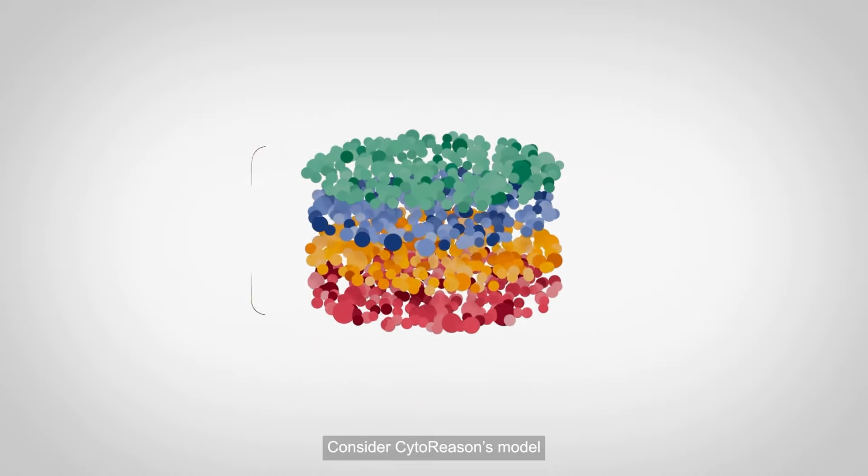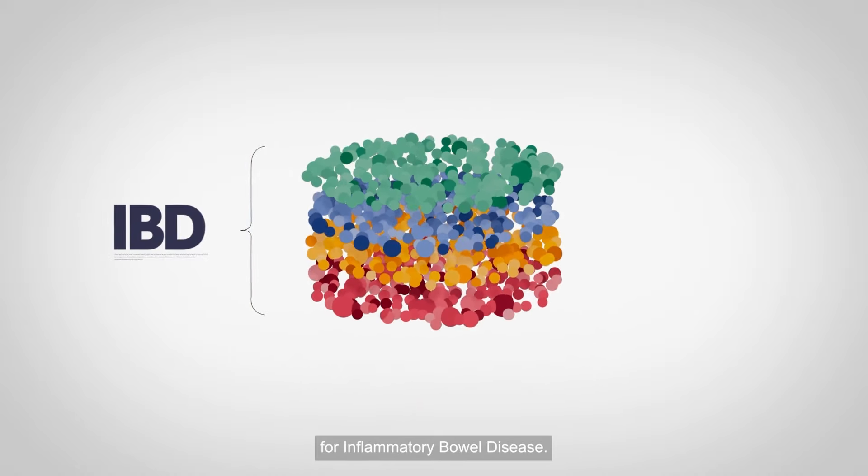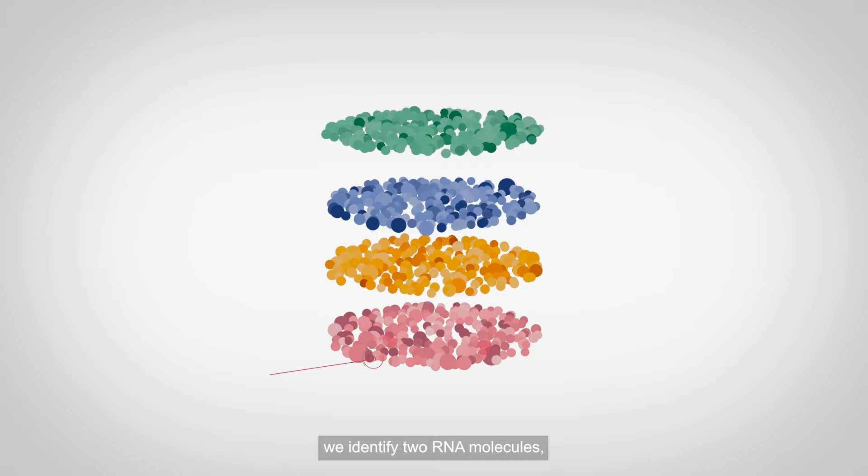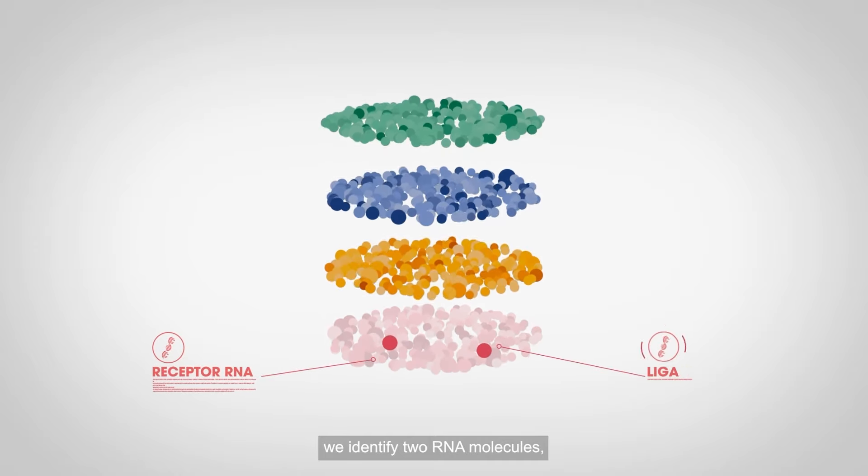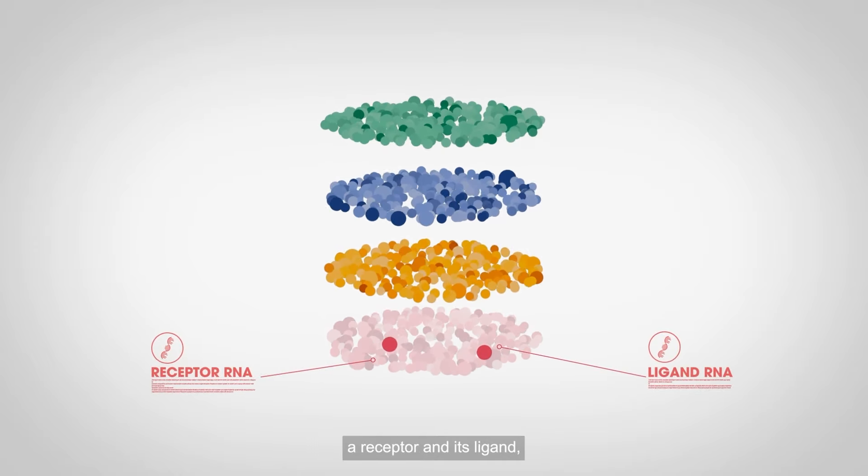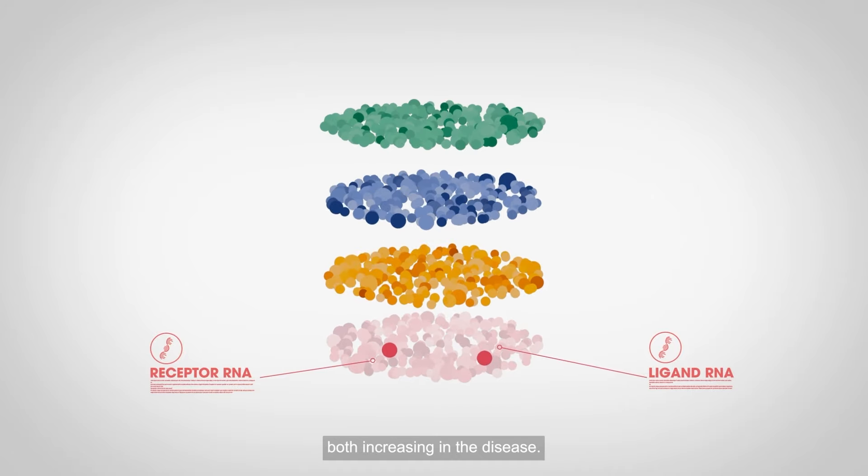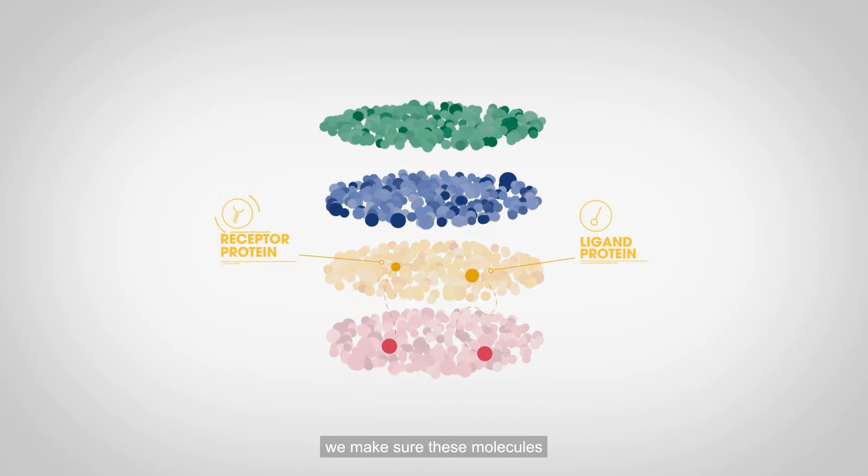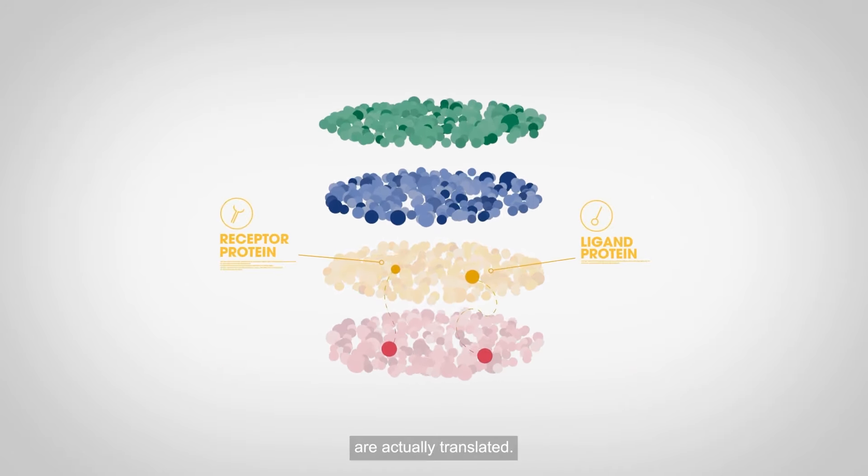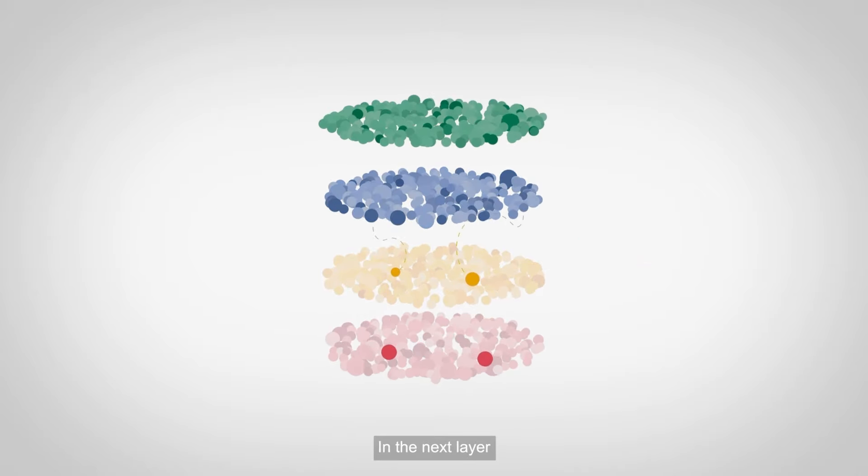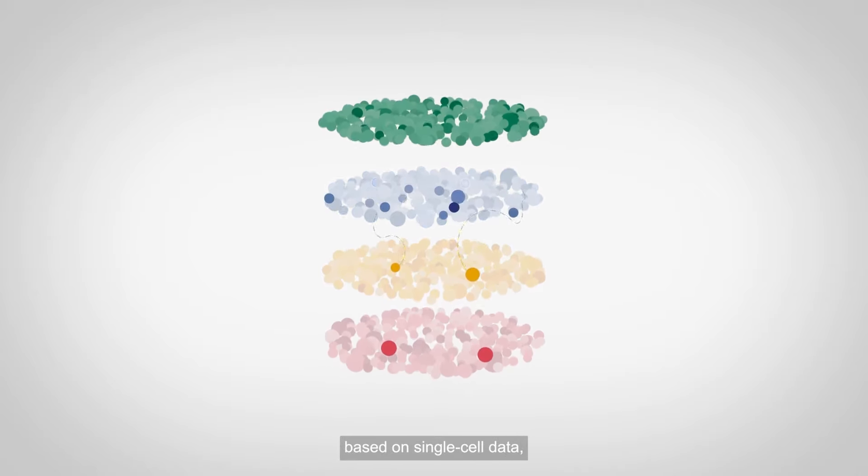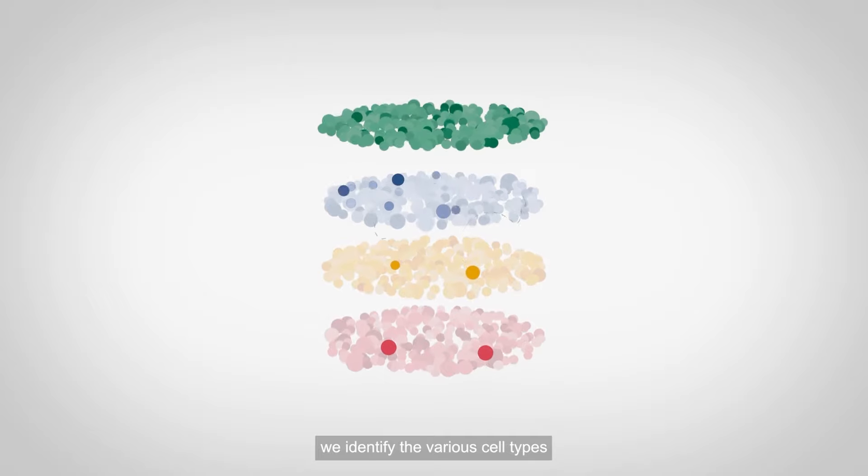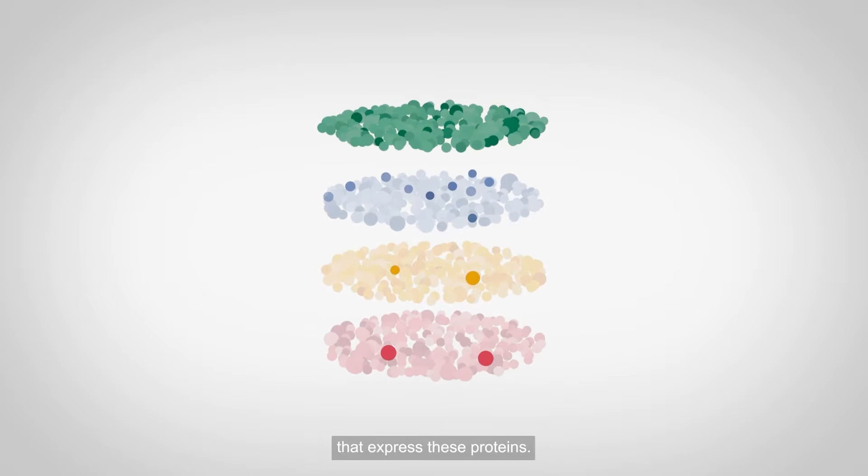Consider CytoReason's model for inflammatory bowel disease. In the bottom layer, we identify two RNA molecules, a receptor and its ligand, both increasing in the disease. In the protein layer, we make sure these molecules are actually translated. In the next layer, based on single-cell data, we identify the various cell types that express these proteins.